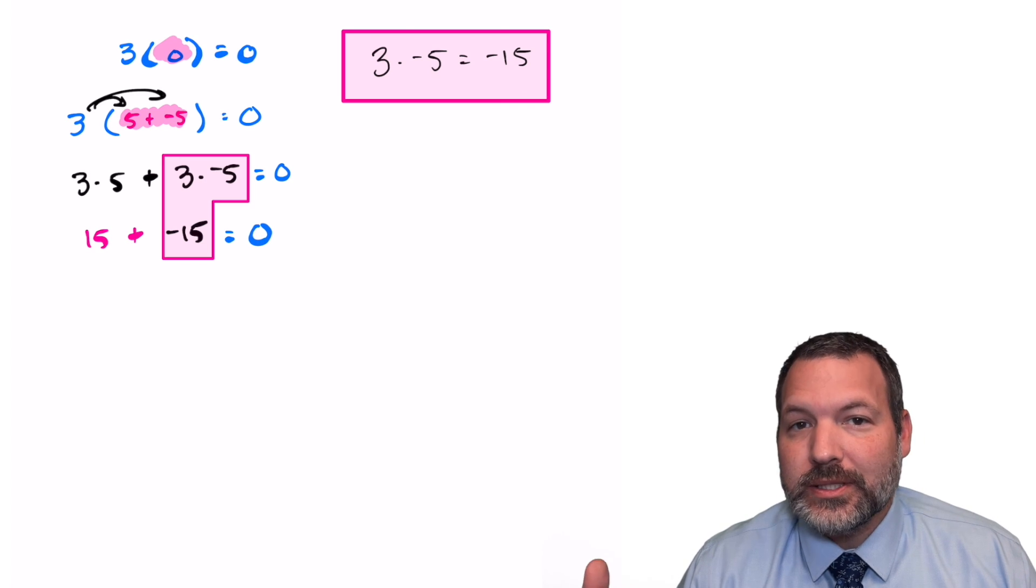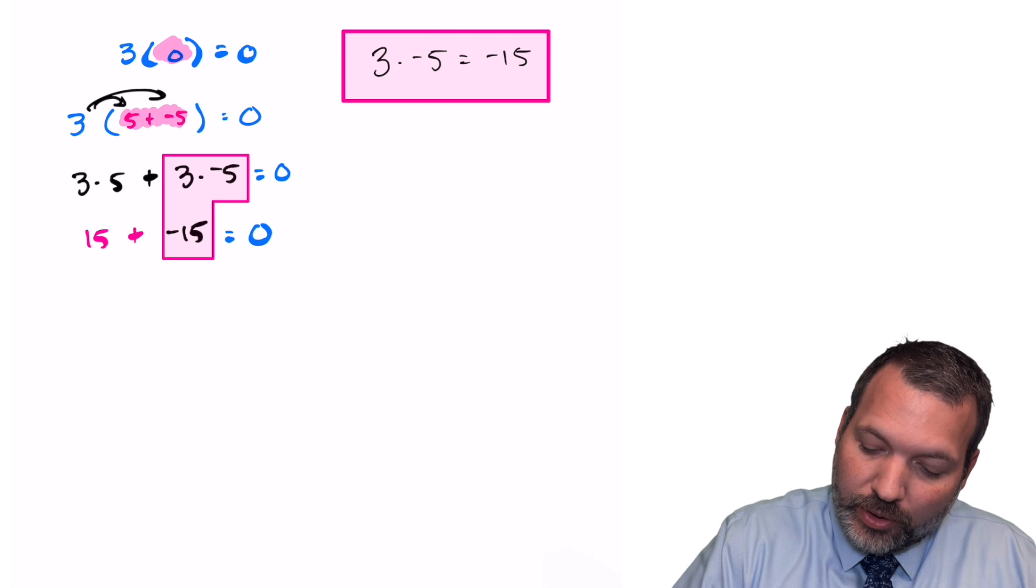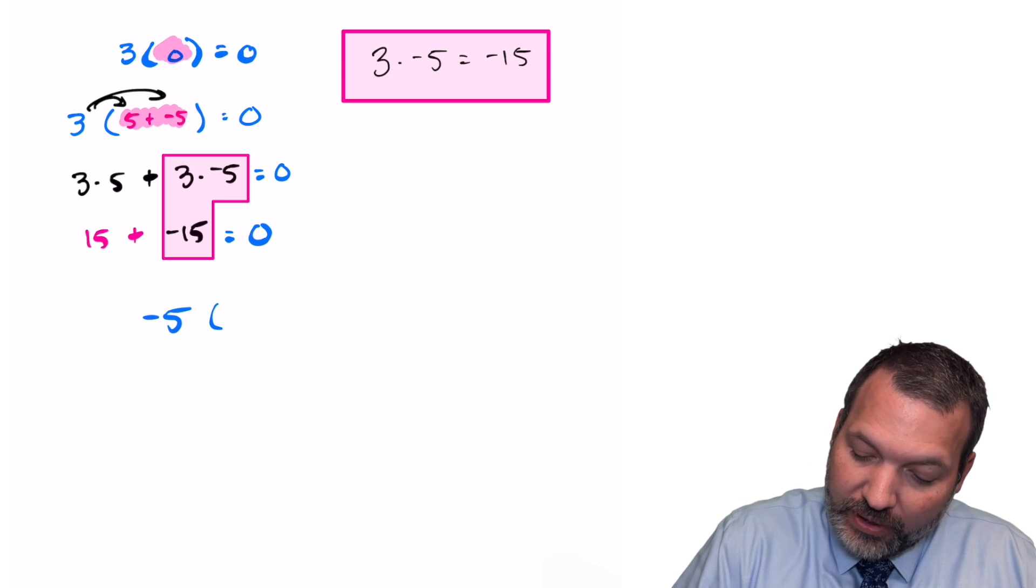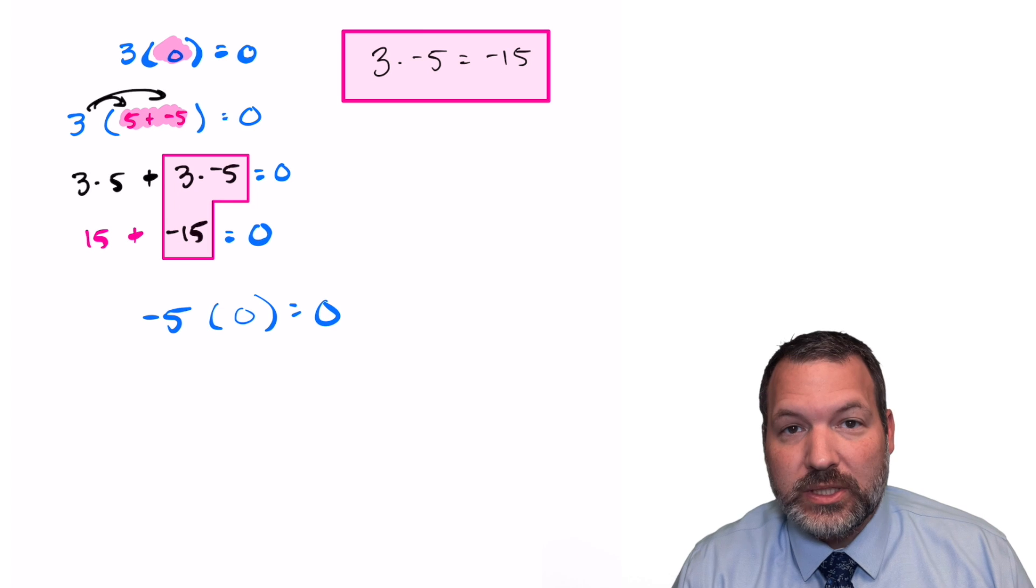Now that we know that, let's consider a slightly different problem. Let's say that we wanna multiply negative five times zero. What should the answer to that be? Zero.